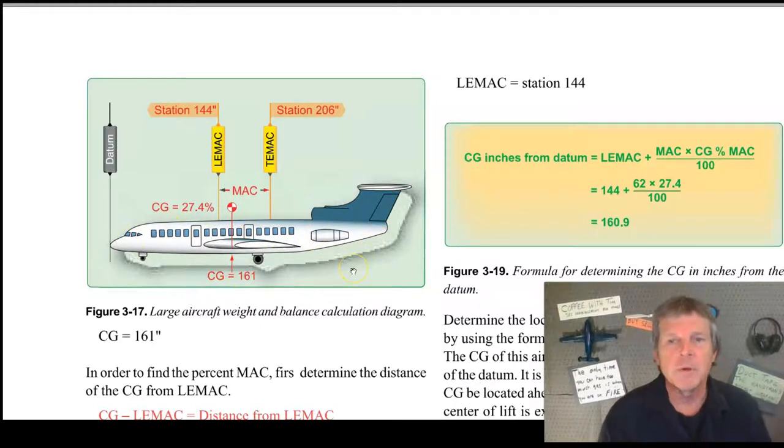If we want to convert this into a MAC number, MAC is expressed in percent with the leading edge being zero and the trailing edge TMAC being 100%. That is the distance of the wing.